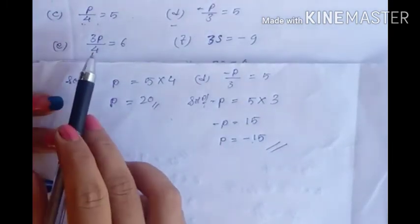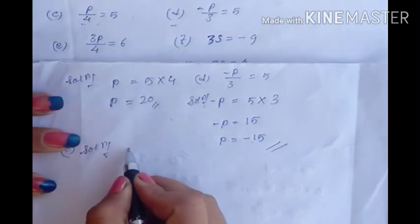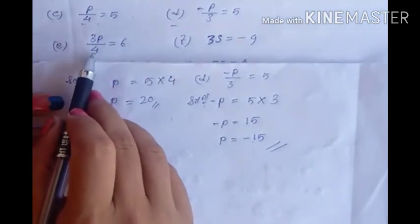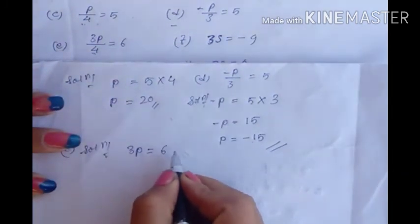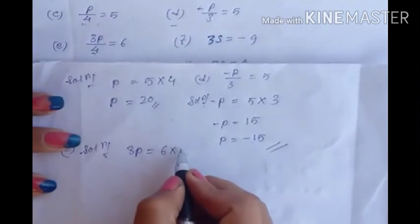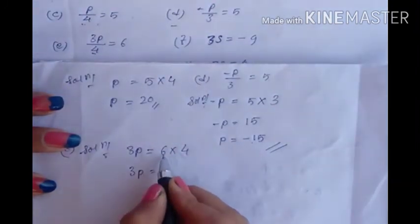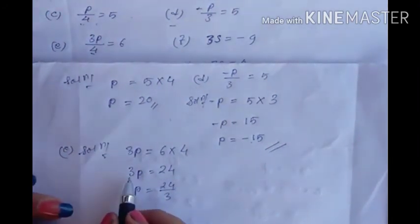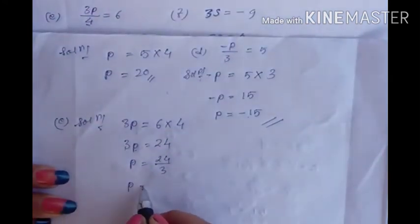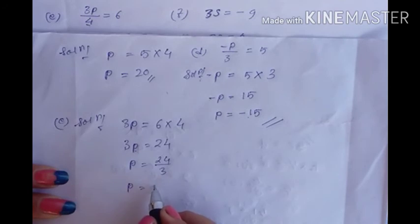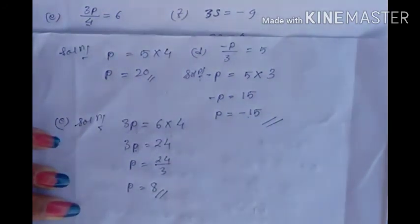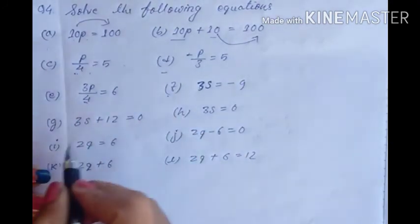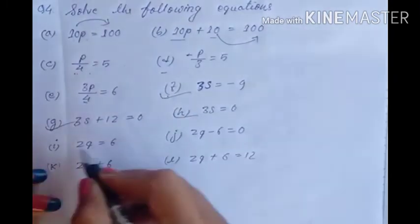For E: 3p upon 4 equals 6. First transpose 4 — divide becomes multiply — so 3p equals 6 into 4 equals 24. Now transpose 3 — multiply becomes divide — so p equals 24 divided by 3, which equals 8. The value of p is 8. The remaining questions F, G, H, I, J, K, L will be your homework.